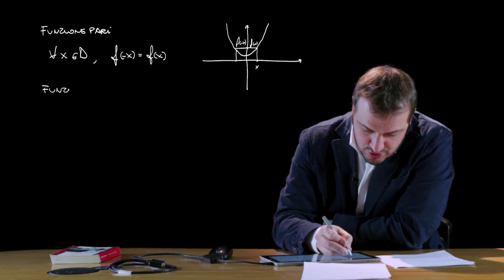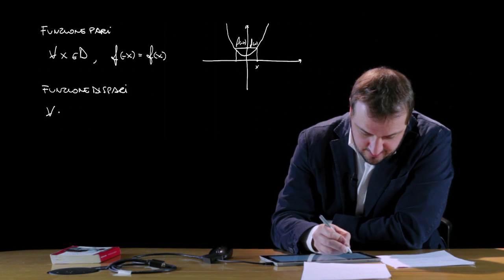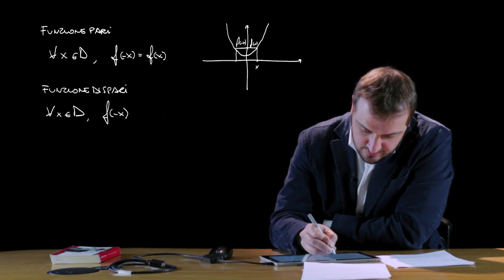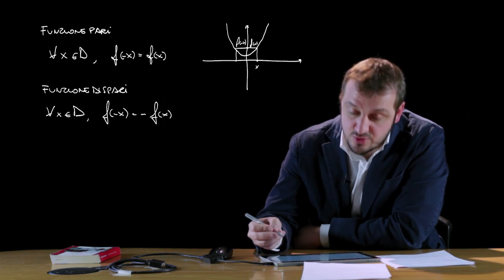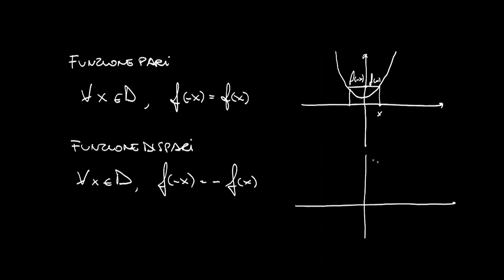Una funzione si dice dispari nel caso in cui per ogni x appartenente al dominio D, f(-x) = -f(x). In questo caso la funzione dispari ha un grafico simmetrico rispetto all'origine. Quindi, per esempio, a un nostro x che restituisce il valore f(x), associamo un valore -x, e il corrispondente valore sarà -f(x).